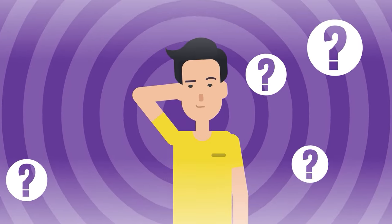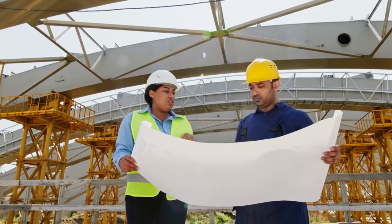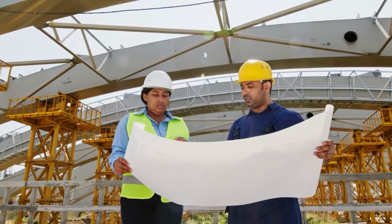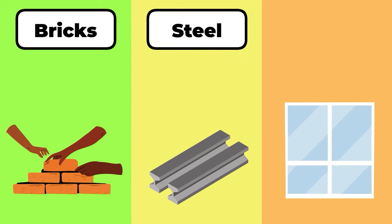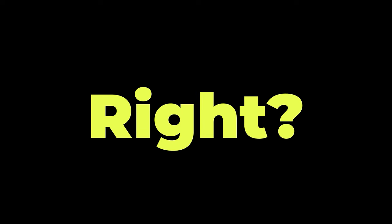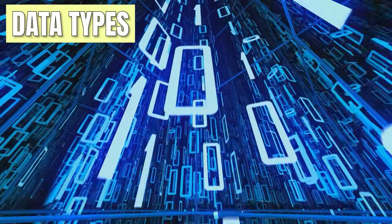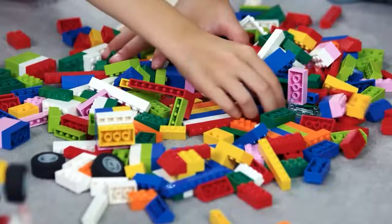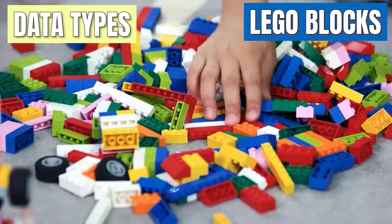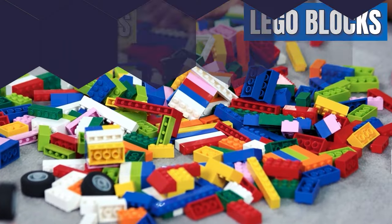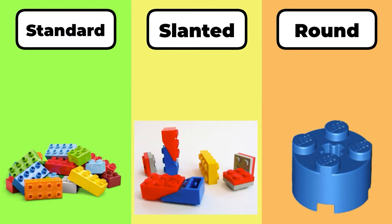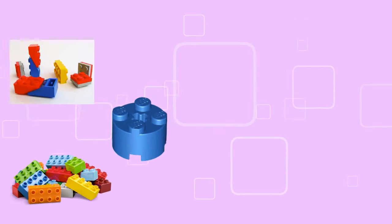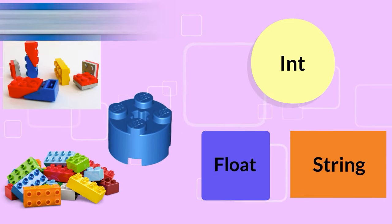So you're probably wondering, what on earth are data types? Imagine you're an architect and you've got different building materials — bricks, steel, glass and more. Each material has its own purpose. Data types are the building blocks that give structure to the digital universe. It's like having different types of Lego blocks. You've got your standard ones, your slanted ones, and those weird round ones that you never know what to do with. Just like Legos, not all data types play nicely together.